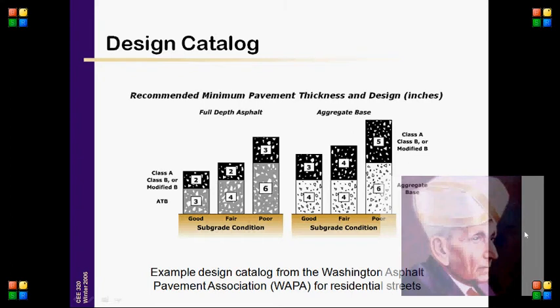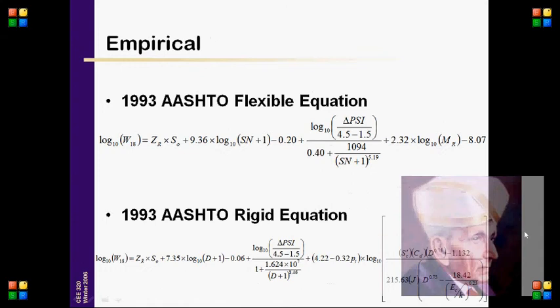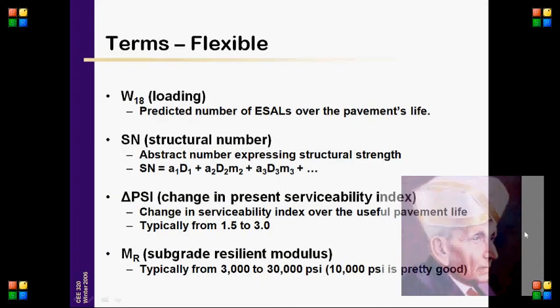The Mechanistic-Empirical approach includes the new AASHTO method, which is as yet unreleased. A Design Catalogue example is shown from the Washington Asphalt Pavement Association, applicable for residential streets.